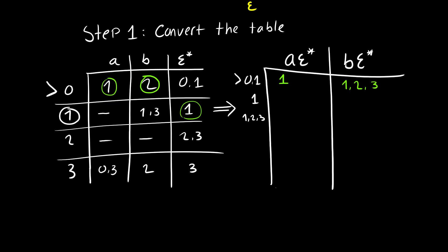Let's start with state {1}. For input A on state one, there's nothing — it doesn't take us anywhere, so we leave that blank. For input B on state one, we go to one and three. We follow epsilon-star: at one epsilon-star is one, at three epsilon-star is three. So B from state {1} gives us {1,3}, which is a new state we need to add to our table.